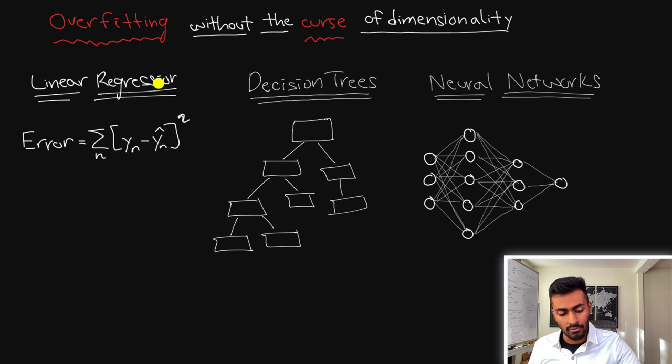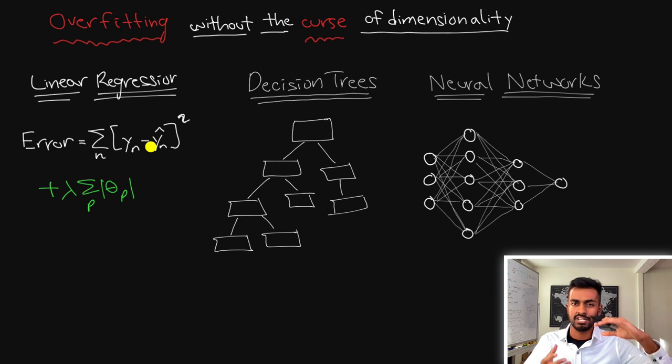A good example of how we would mitigate the overfitting for linear regression is through adding a penalty term. This penalty term can either be a ridge or lasso regression, which will penalize the coefficients of our prediction, thus constraining the coefficient values to take on only specific set of values, hence mitigating overfitting.